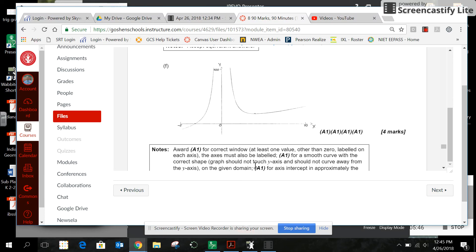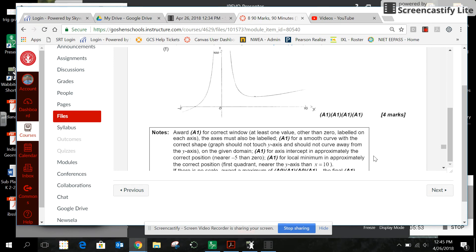One point for a local minimum in approximately the right place. So why be approximate when you can be exact? So again, that's four points right there just for making a good graph.